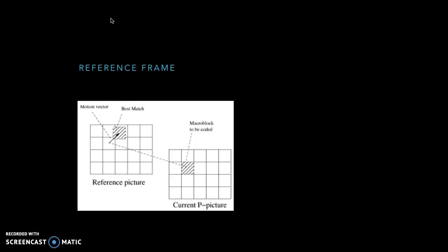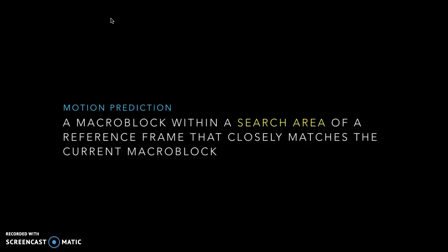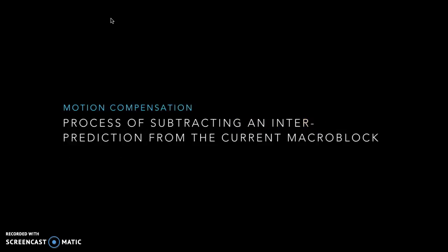Motion prediction is the process of finding this block in a future frame that has moved and closely matches a particular macroblock. Motion compensation is the process of subtracting an inter prediction from the current macroblock.